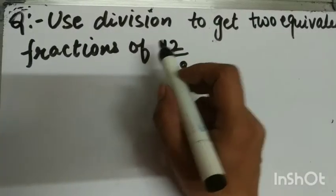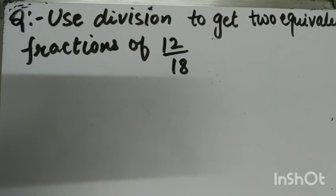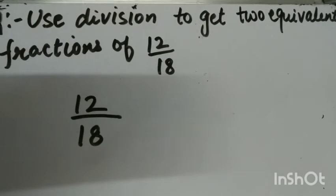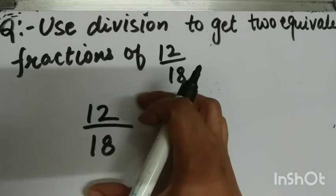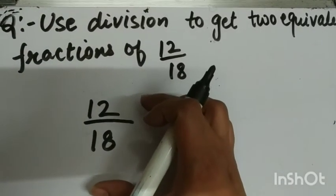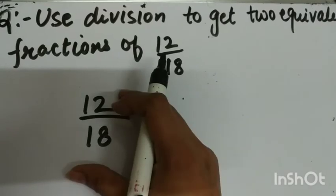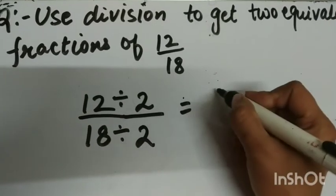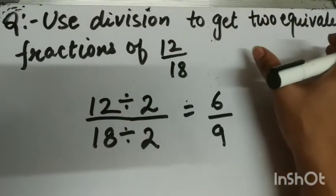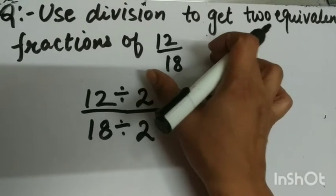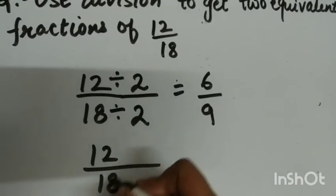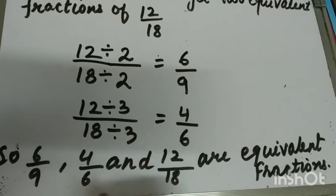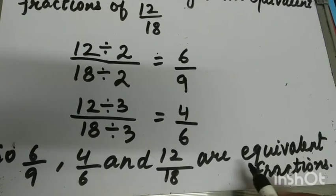The next question is: use division to get two equivalent fractions of twelve upon eighteen. We choose a number that divides both numerator and denominator. Both 12 and 18 are even, so both are divisible by two — giving six upon nine. We also need a second equivalent fraction: both 12 and 18 are divisible by three — giving four upon six. So six upon nine, four upon six, and twelve upon eighteen are equivalent fractions.